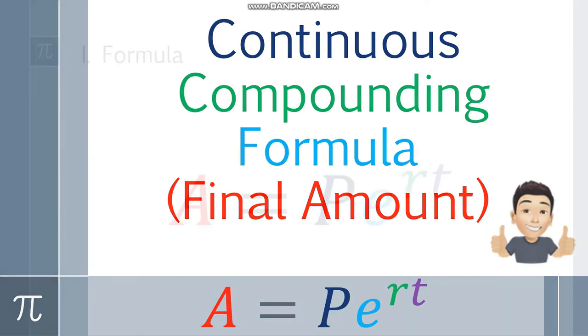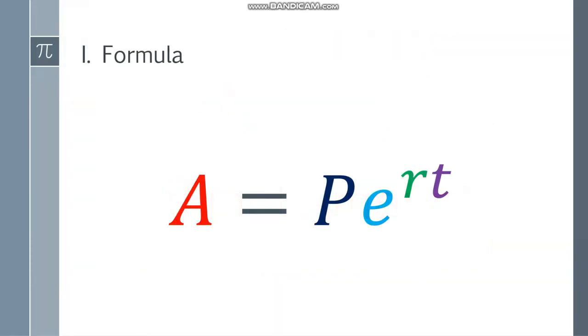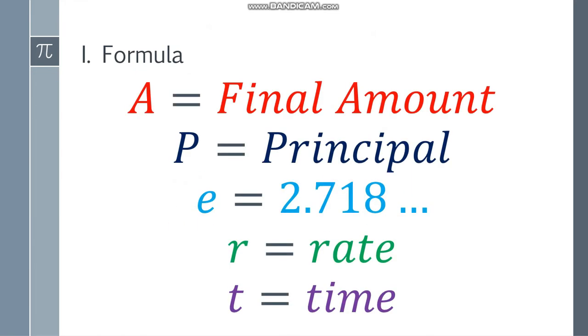Final amount. So let's have the formula. This is our basic formula. We have A equals P times e to the rt, where A will be the final amount, P will be the principal, and e is 2.718 something. I'll show you the value of e later. And r will be the rate and t will be the time.